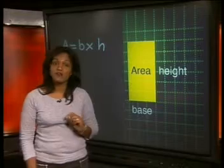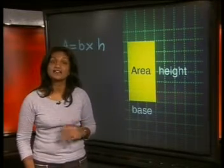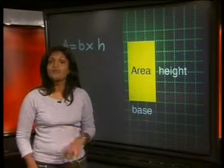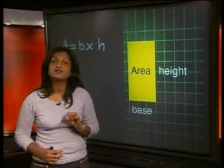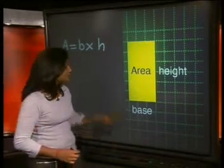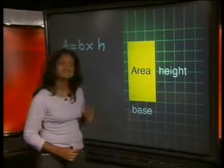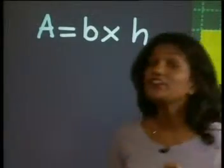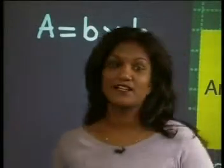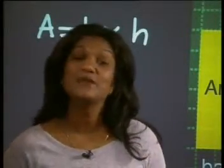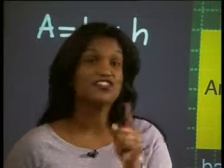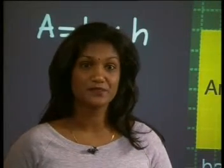Now you may have learned before that the area of a rectangle is found by multiplying the length times the breadth. Do you see that in this diagram the height and the base is the same thing? In the rectangle, the length and the breadth is the same measurement as the height and the base, but this changes for other shapes. So it is more accurate to use height and base.